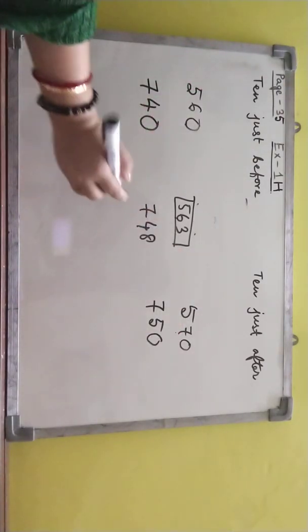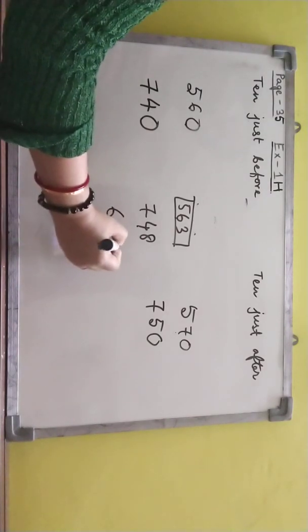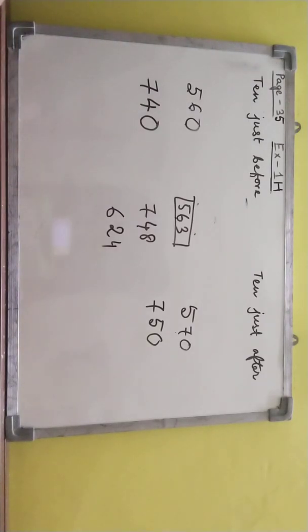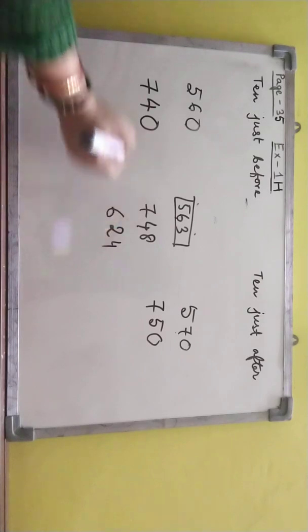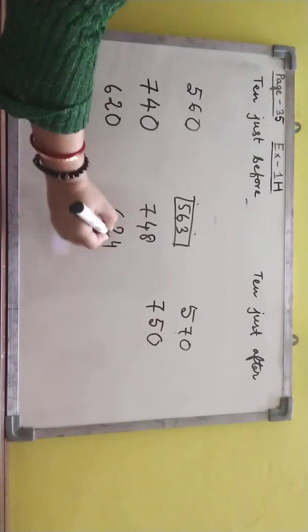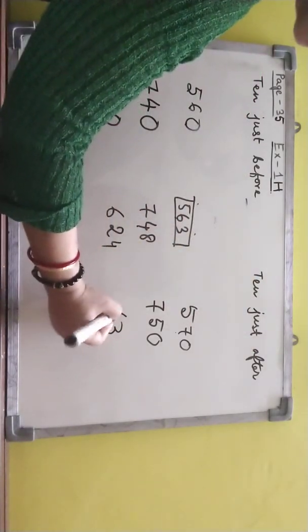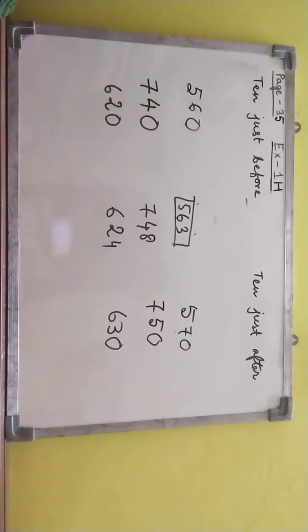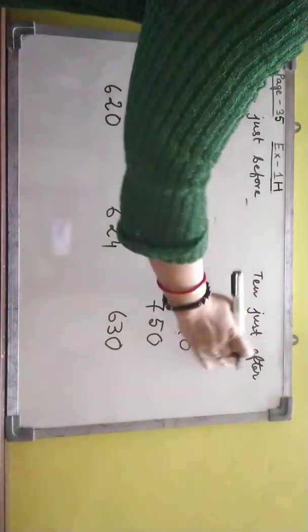Another example: 624. So what I have to notice? First thing, ones tens, tens place. Tens place will remain same. I have to put zero in ones place. Again tens place for after, three, then zero. I think you have understood this, how to find ten just before and ten just after.